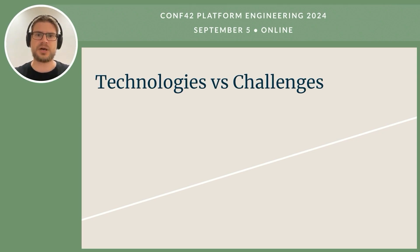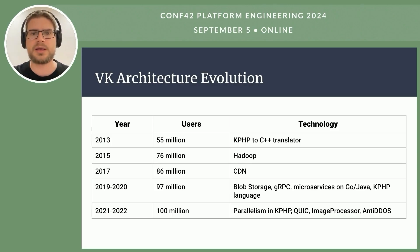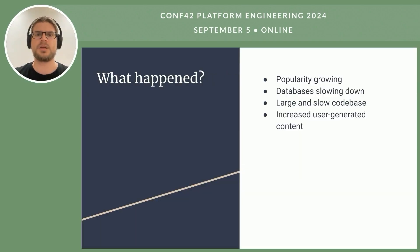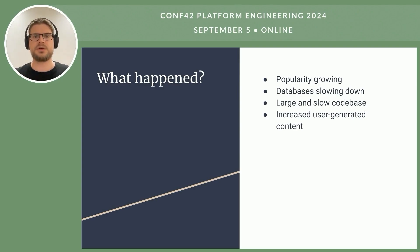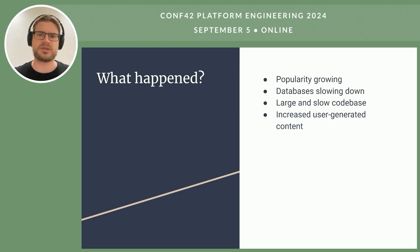Further on, we'll discuss some possible ways to overcome these challenges and meet high load requirements. Here you can see how VK social network grew and gradually transformed its architecture, adapting or creating technologies that suited the scale and new requirements. As platform growth attracted a large audience, numerous bottlenecks, application issues, and optimizations became a necessity.